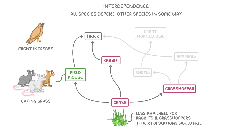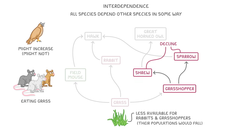However, as hawks also feed on rabbits, and there would be fewer rabbits, the hawk population might not actually increase all that much. And we could go on to describe the effects on all the other species too, such as how the decline in grasshoppers could lead to a decline in the shrew and sparrow populations as well. There's no need to remember any specific examples — you just need to understand how these relationships work and be able to predict the knock-on effects of any changes.